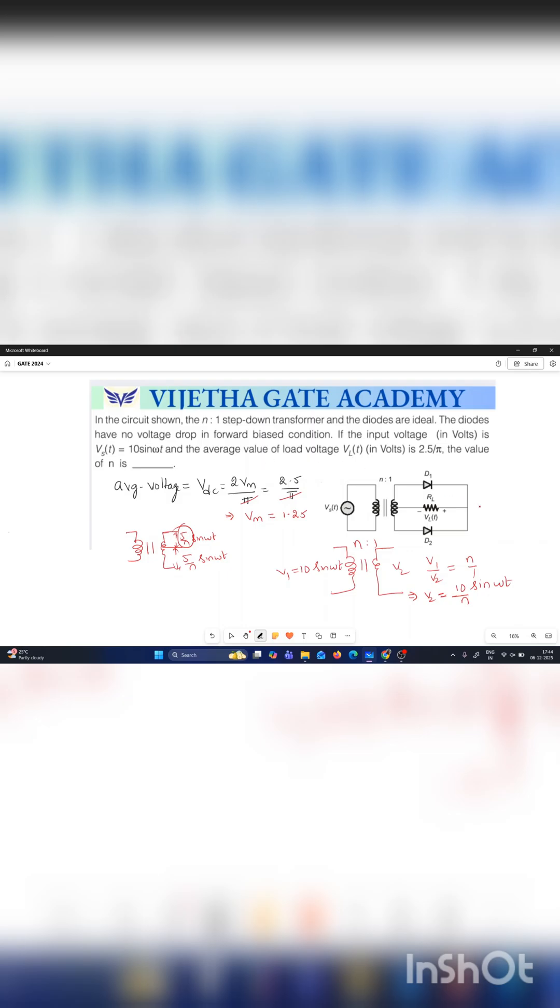In this question a full wave rectifier is given and it is also mentioned that the diodes are ideal. So whenever the diode is ideal in the forward bias condition there is no voltage drop across the diodes. Here the input is also applied, 10 sin omega t, and the average value is given. We are asked to find the value of n, which is the number of turns in this winding. So let us see how to solve this question.